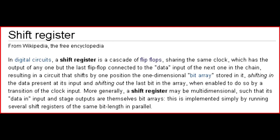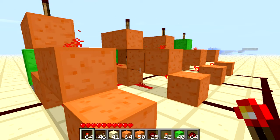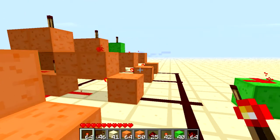A shift register may be multidimensional, such that the data input and stage outputs themselves are bit arrays. This is implemented simply by running several shift registers of the same bit length in parallel. There is a link in the description if you want to read more about that.